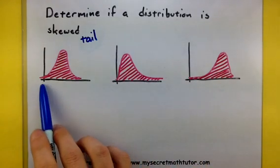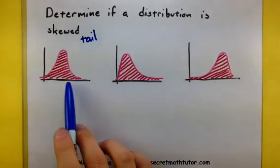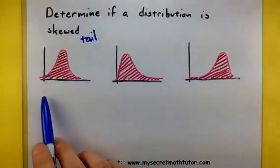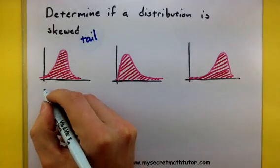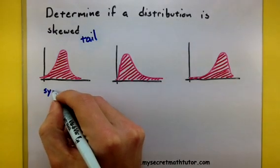In the first example, notice how all of my data is evenly distributed on both sides. So the tails are pretty much the same. This would be an example of a symmetric distribution.